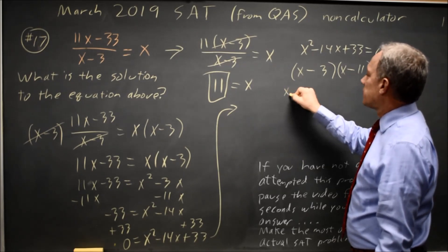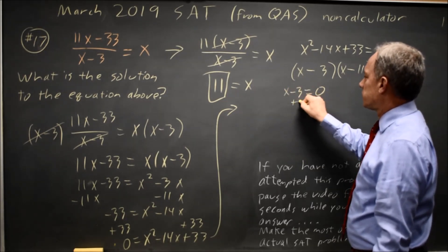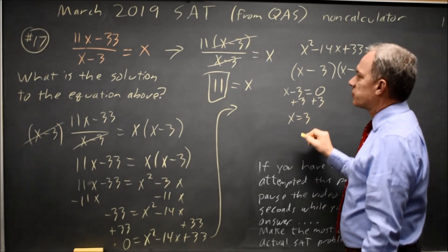So this product is 0, either x minus 3 equals 0, meaning x equals positive 3.